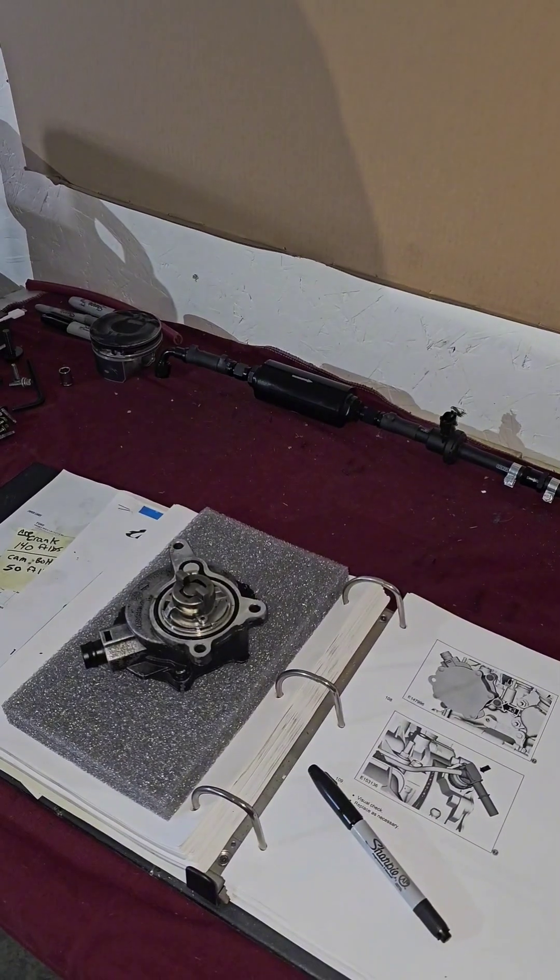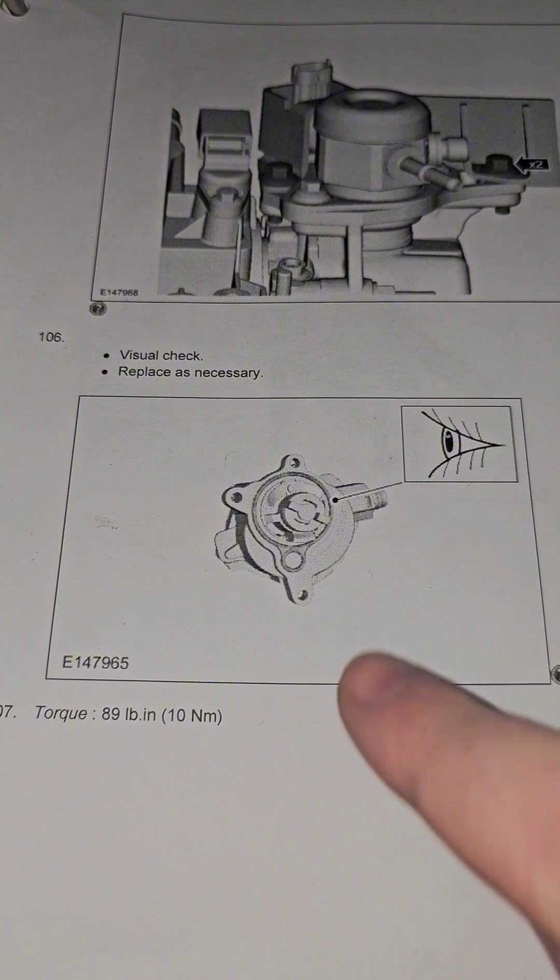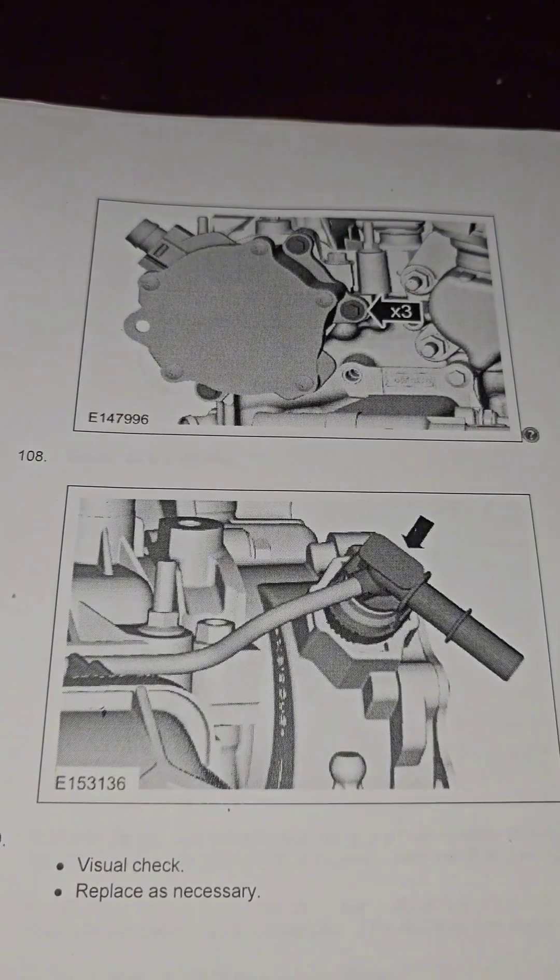Welcome back to part 6 of the Focus ST torque specs and sequences. For the three bolts on the vacuum pump, it's going to be 89 inch-pounds. There's no torque sequence for those bolts. Here's an up close shot.